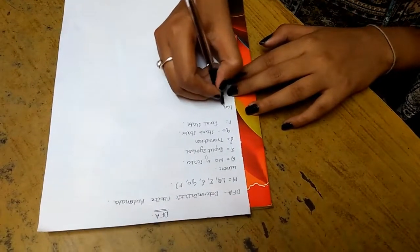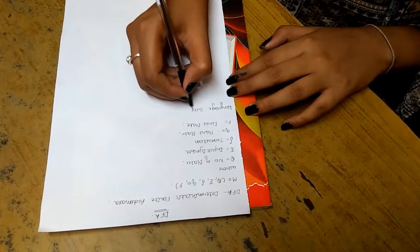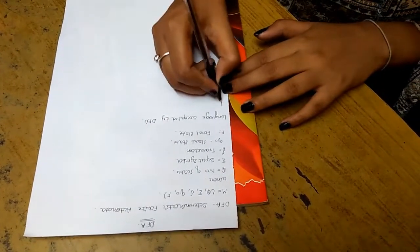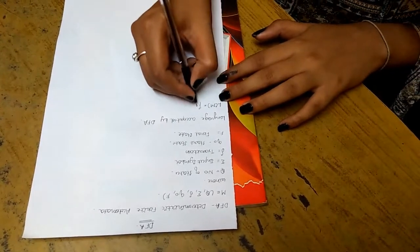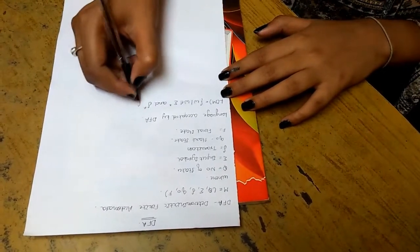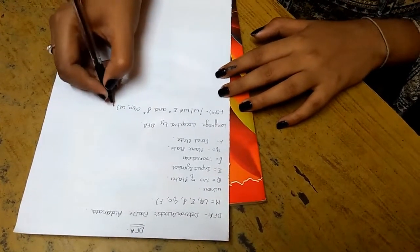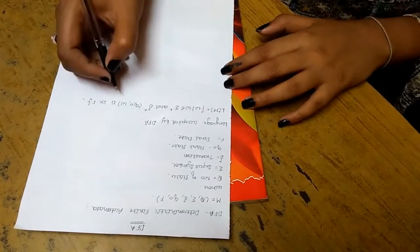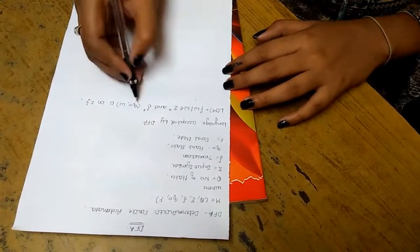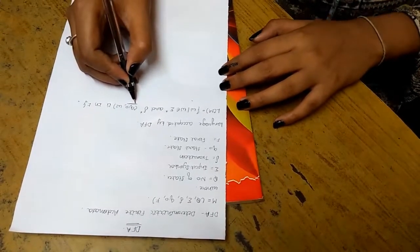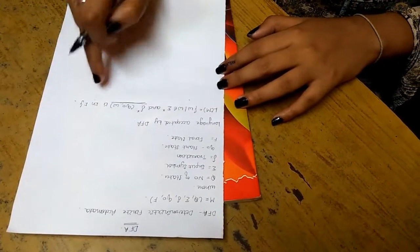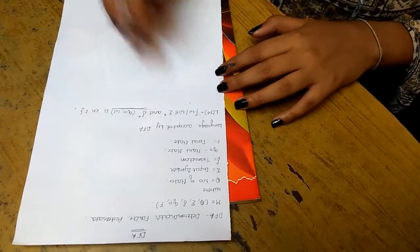Now let us see what is the language accepted by DFA. It is formally represented as L(M) equals the set of W such that W belongs to Σ* and ρ*(Q0, W) is in F. That is, a string W is accepted by the machine if it takes the machine from the initial state Q0 to the final state — that is, ρ*(Q0, W) should be in F. This is the most important concept.